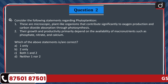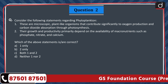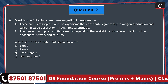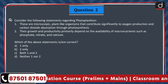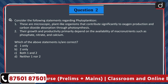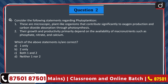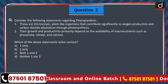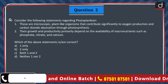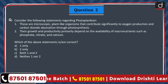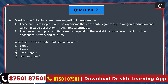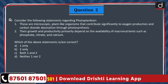Question 2. Consider the following statements regarding phytoplankton. 1. These are microscopic, plant-like organisms that contribute significantly to oxygen production and carbon dioxide absorption through photosynthesis. 2. Their growth and productivity primarily depend on the availability of macronutrients such as phosphate, nitrate and calcium. Which of the above statements is or are correct?